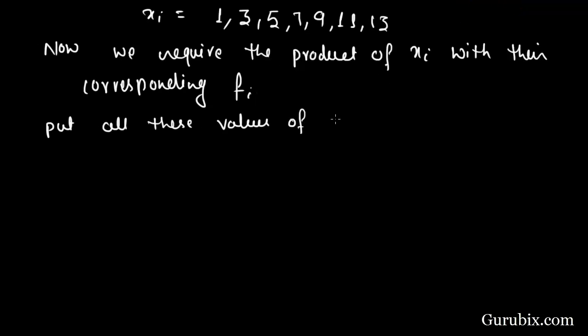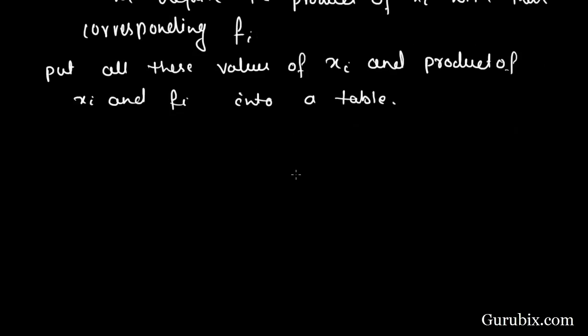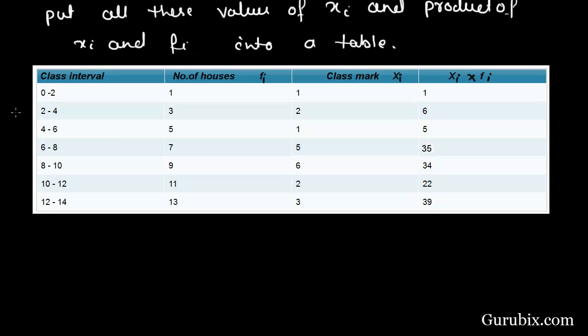Put all these values of xi and product of xi and fi into a table. Let us draw a table. In this table, there are four columns.